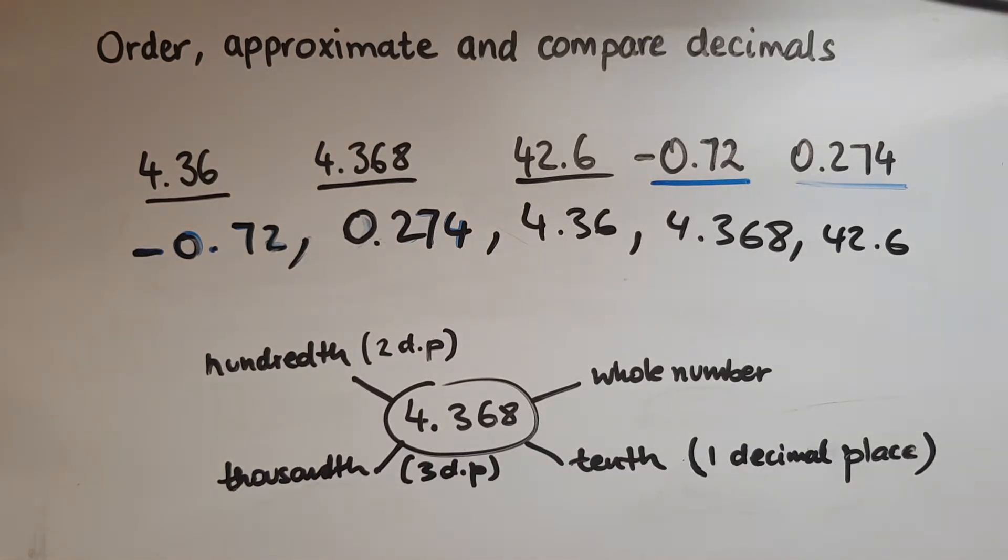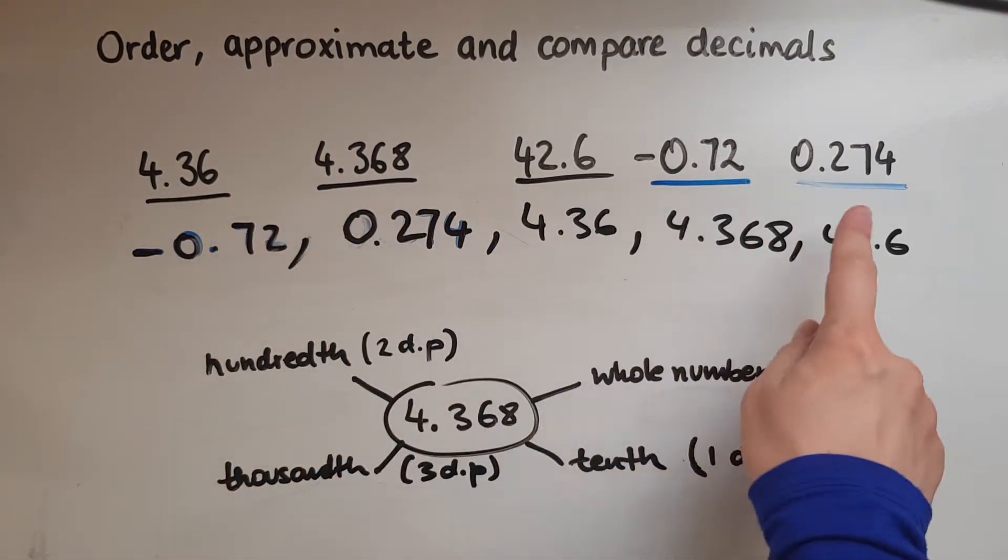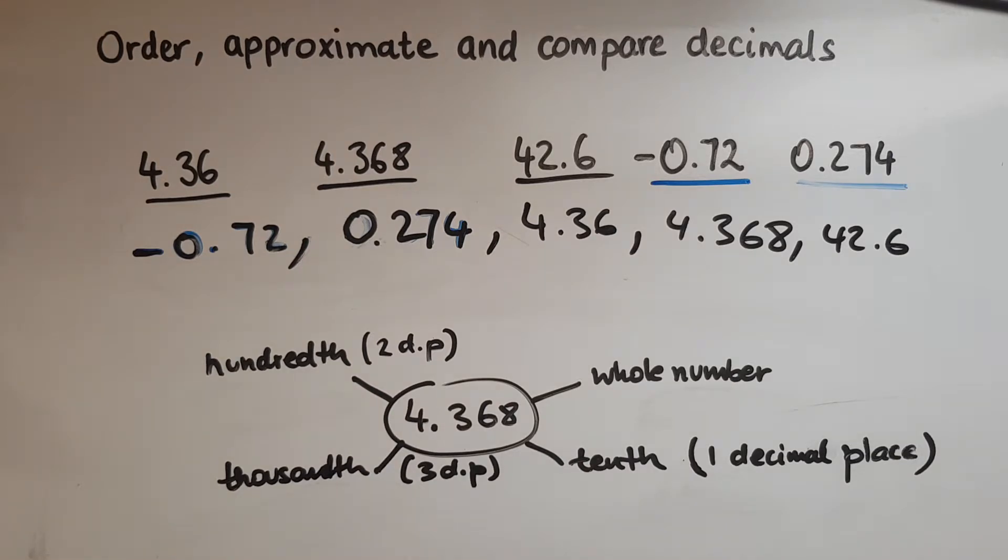So always first look at the whole number. The bigger the whole number the better. If it's a positive that should come before a negative in terms of the biggest.